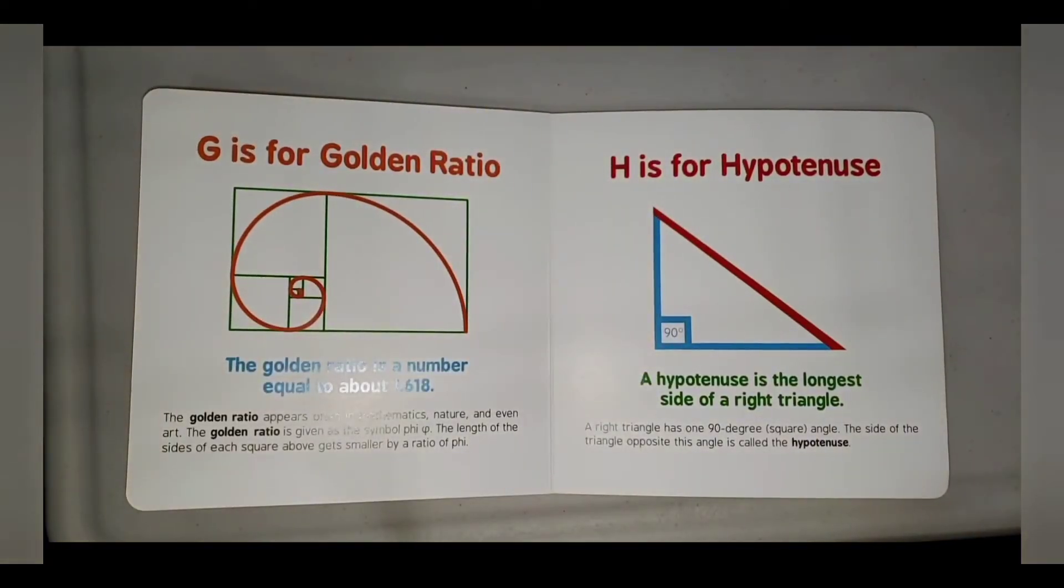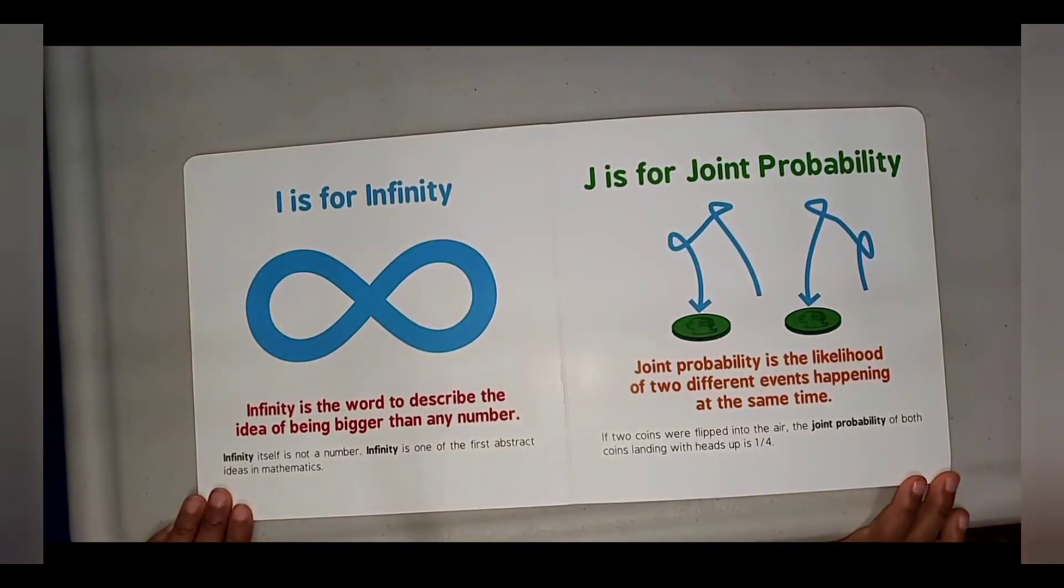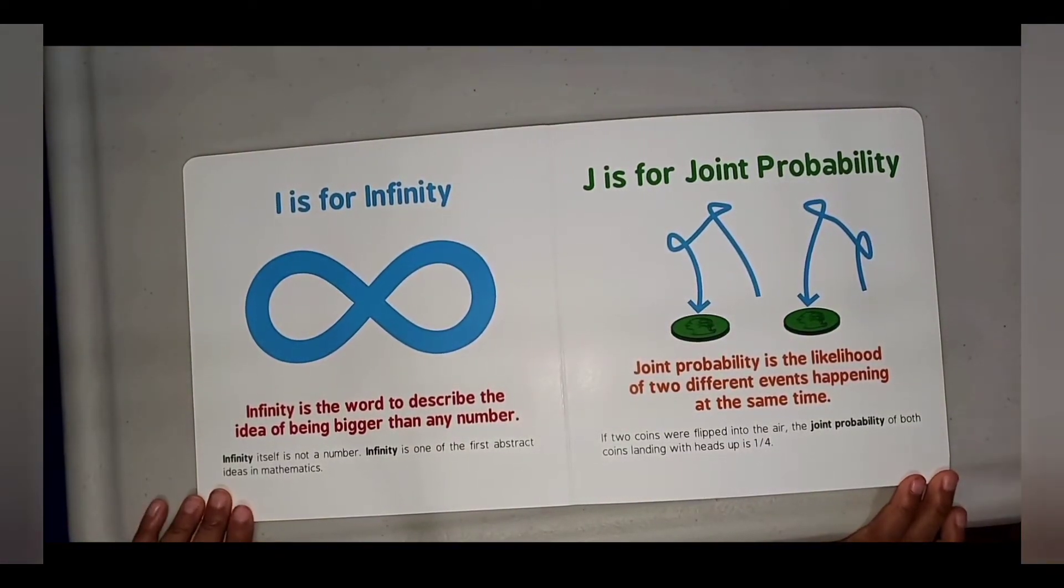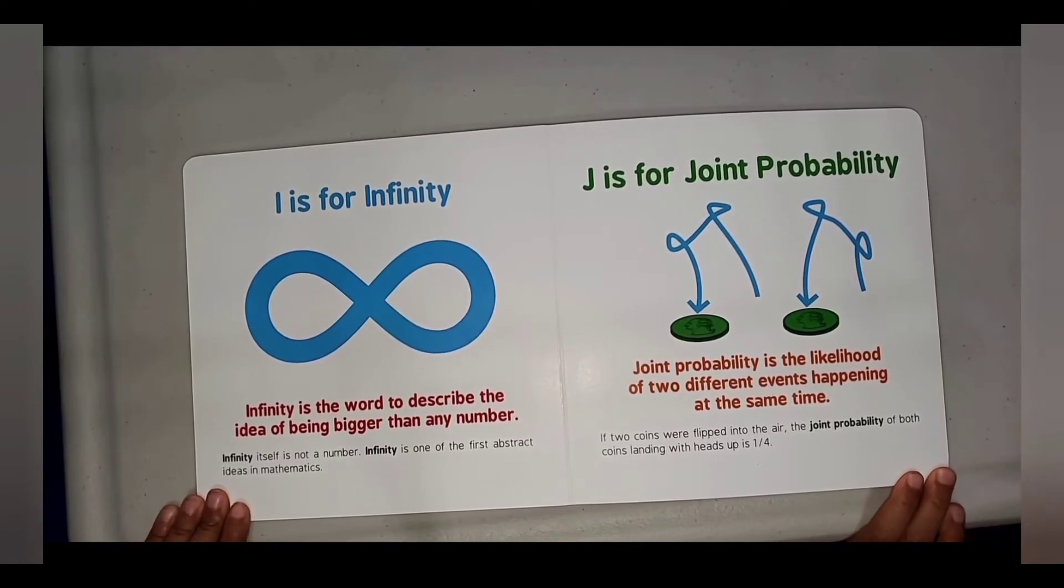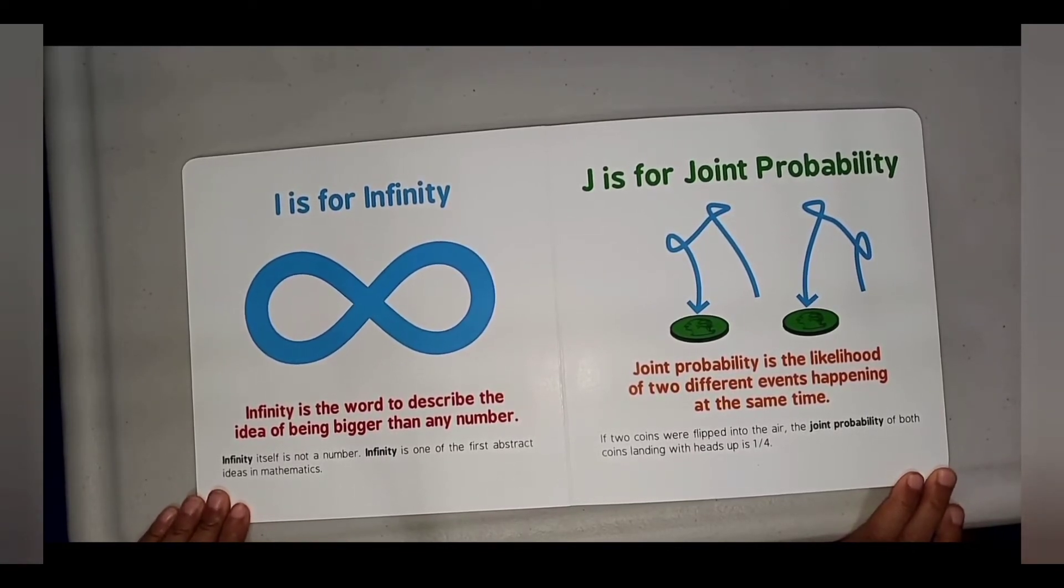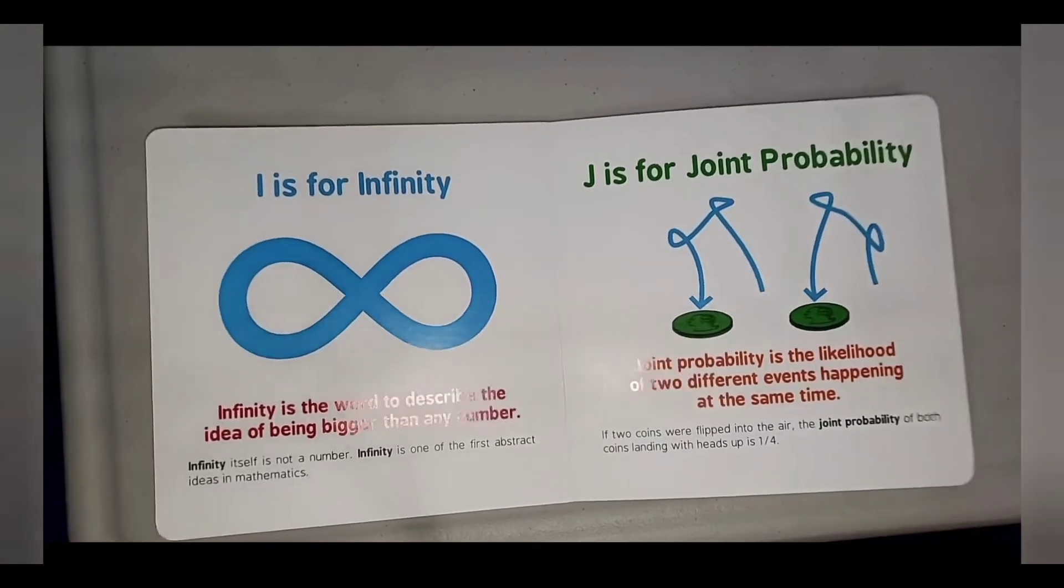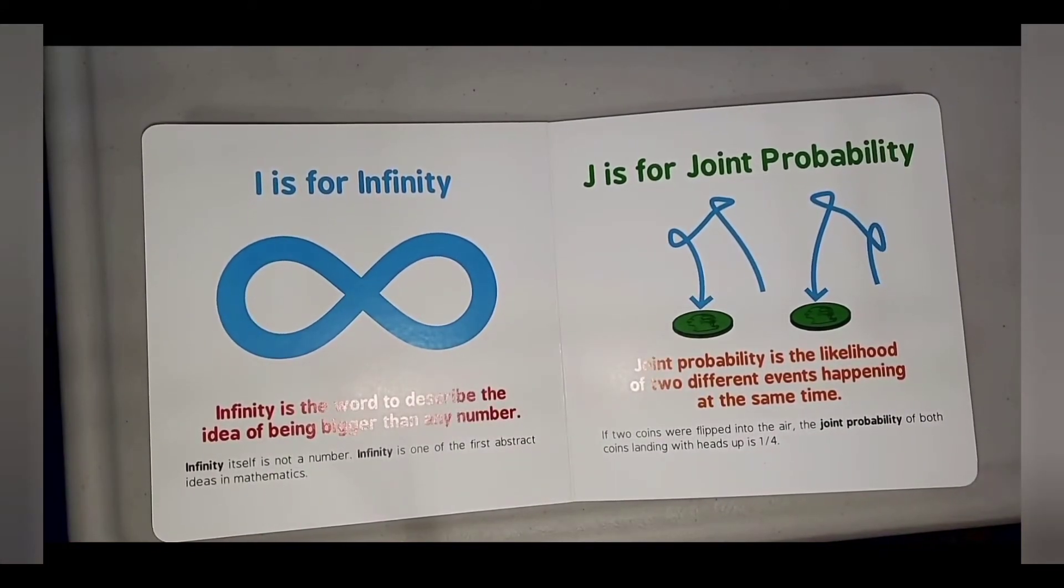I is for Infinity. Infinity is the word to describe the idea of being bigger than any number. Infinity itself is not a number. Infinity is one of the first abstract ideas in mathematics.